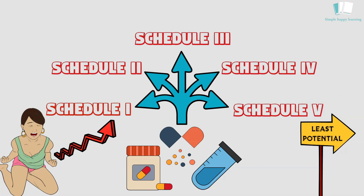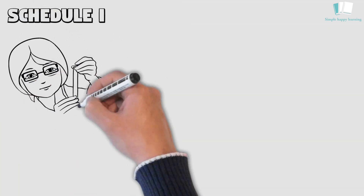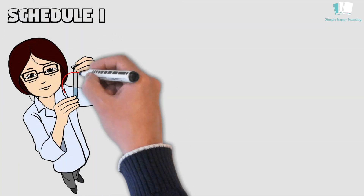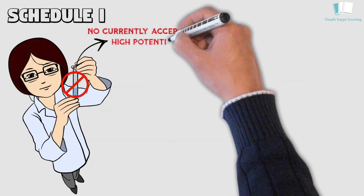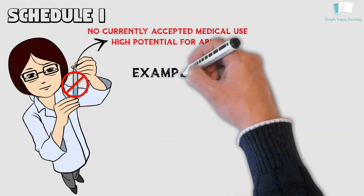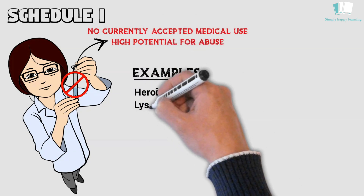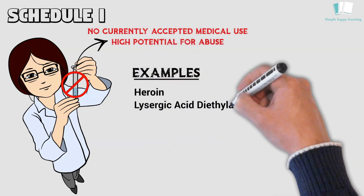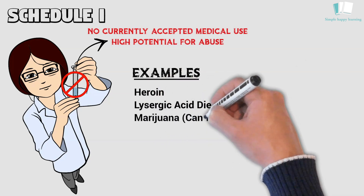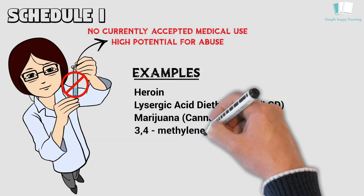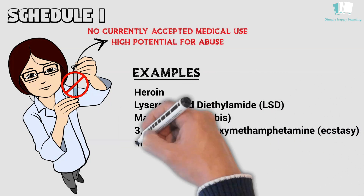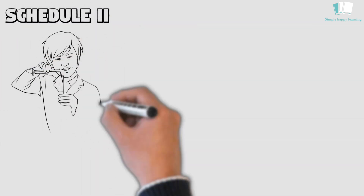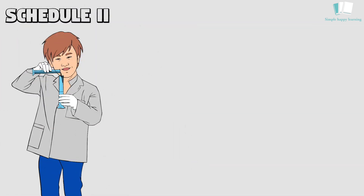Schedule 1: Schedule 1 drugs, substances, or chemicals are defined as drugs with no currently accepted medical use and a high potential for abuse. Some examples of Schedule 1 drugs are heroin, lysergic acid diethylamide (LSD), marijuana/cannabis, 3,4-methylenedioxymethamphetamine (ecstasy), methaqualone, and peyote.